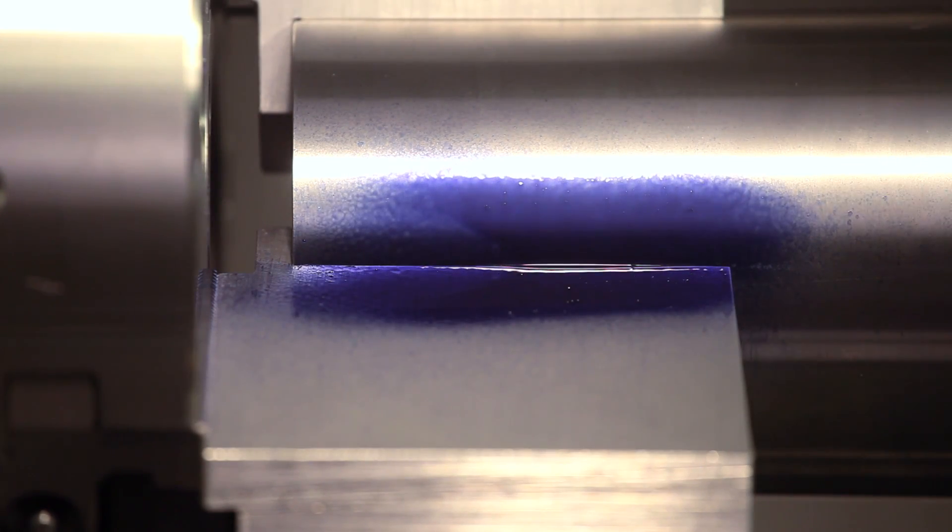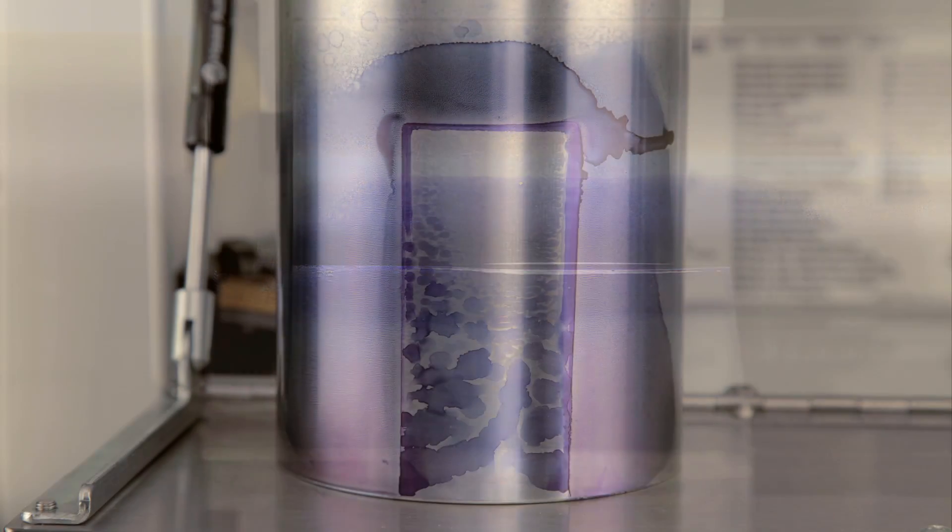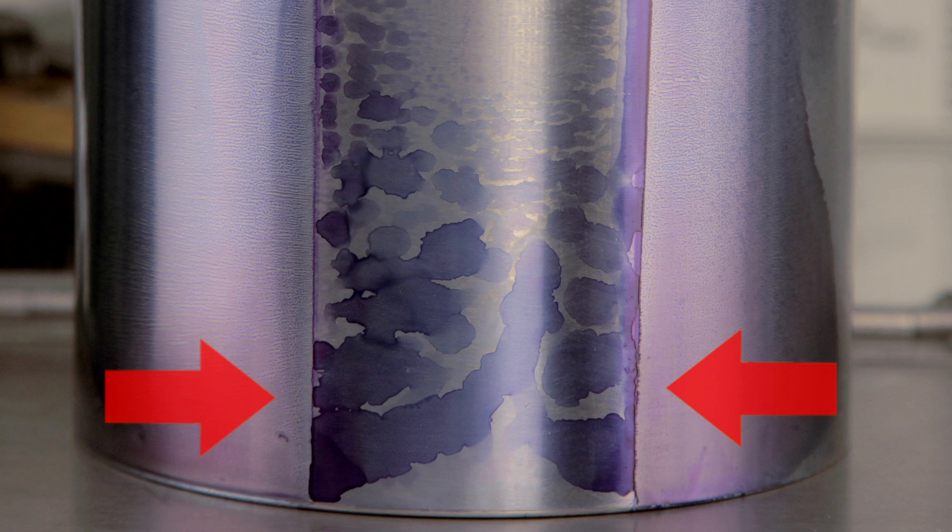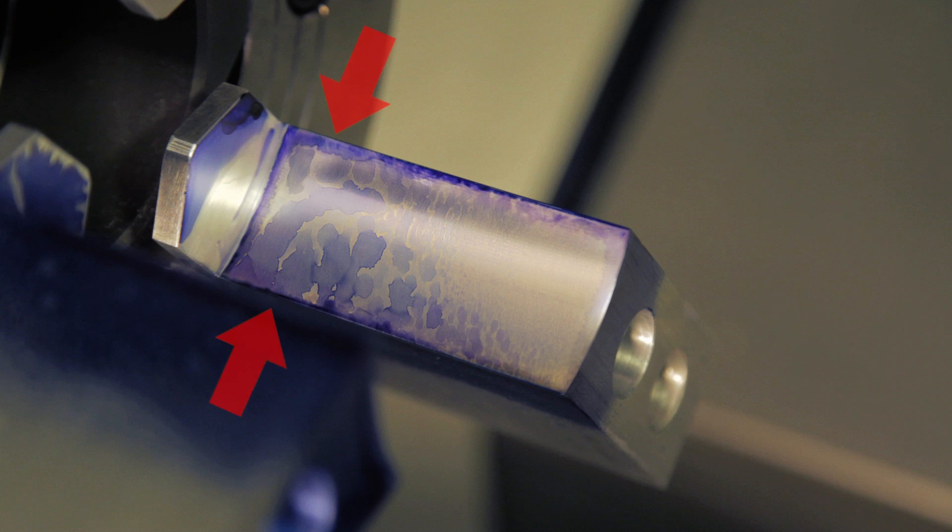Now, let's look at what too much and too little taper look like using our setup. One thousandth of an inch too much taper results in a concentration of bluing at the base of the workpiece, indicating the jaws are not contacting in this region.